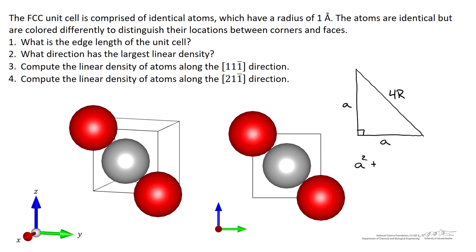Pythagorean's theorem says that A squared plus A squared is equal to 4R squared. Solving for A squared we're left with 16 divided by 2 times R squared. Solving for A we get the square root of 8 times R. So A is equal to 2.83 multiplied by R which in our case is equal to 1 angstrom. So we have an edge length of 2.83 angstroms.